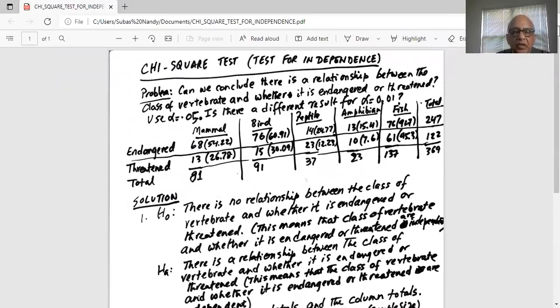Chi-square test for independence problem. Can we conclude there is a relationship between the class of vertebrate and whether it is endangered or threatened? Use level of significance 0.05. Is there a different result for level of significance equal to 0.01?